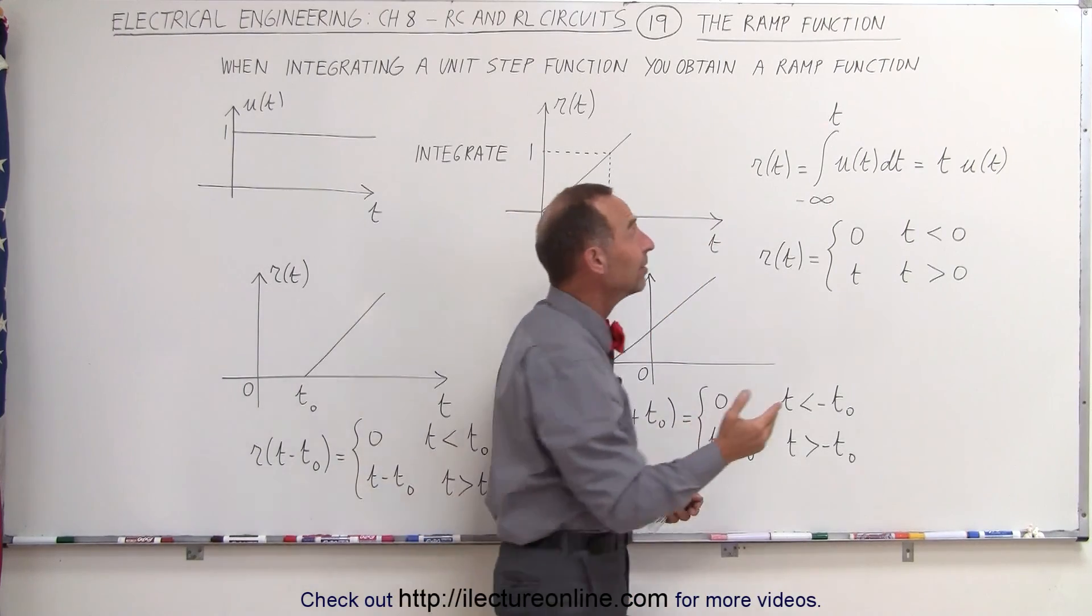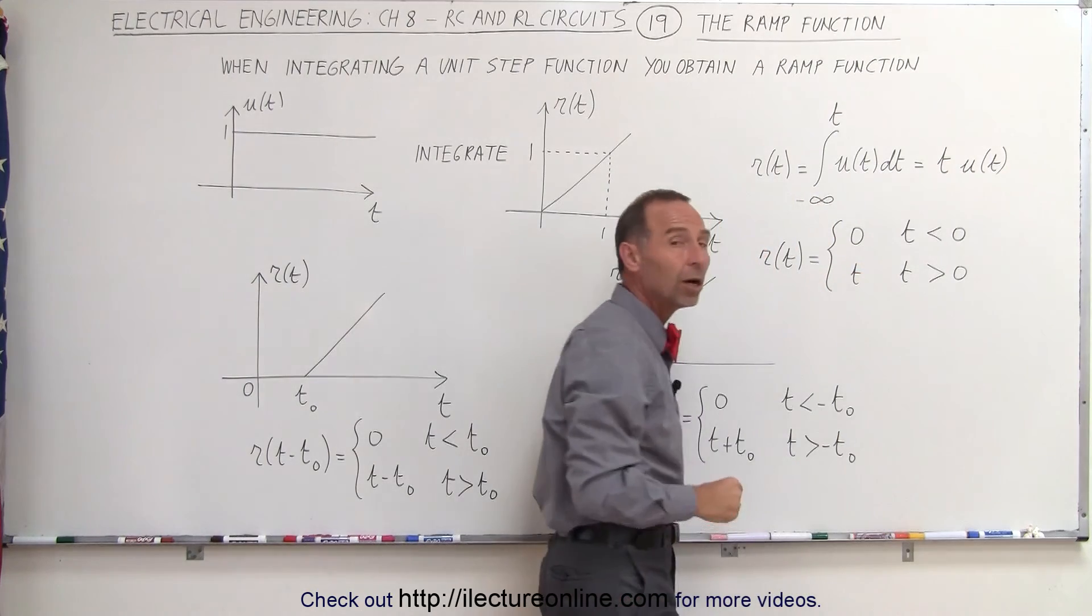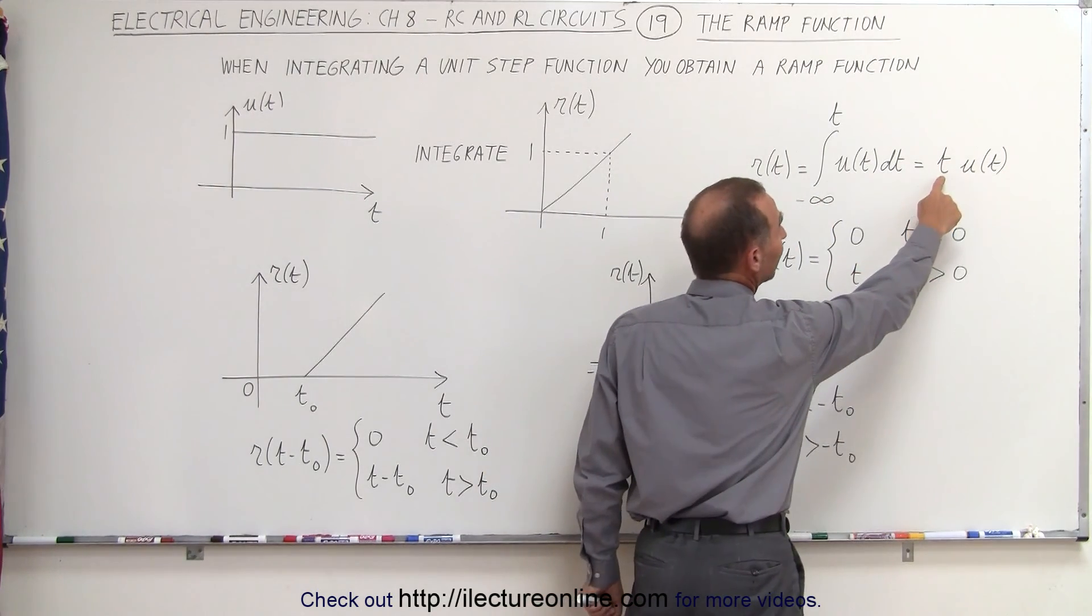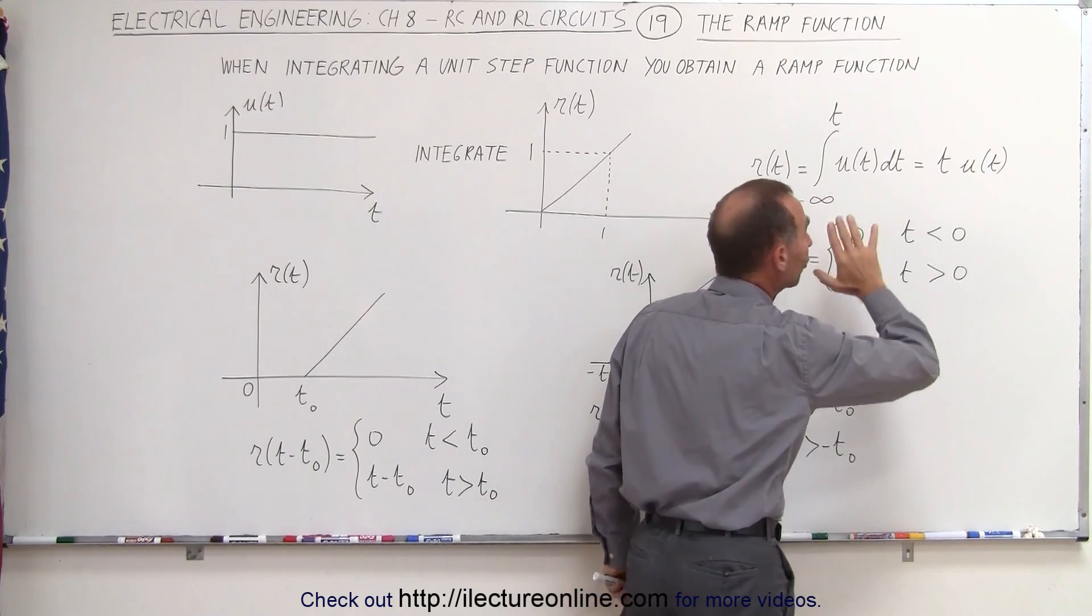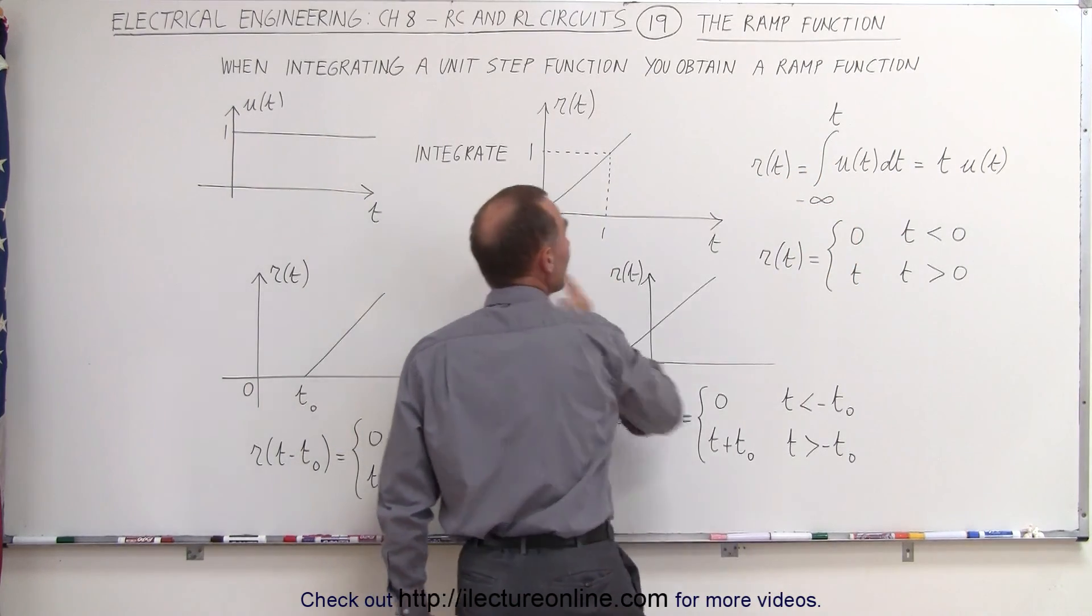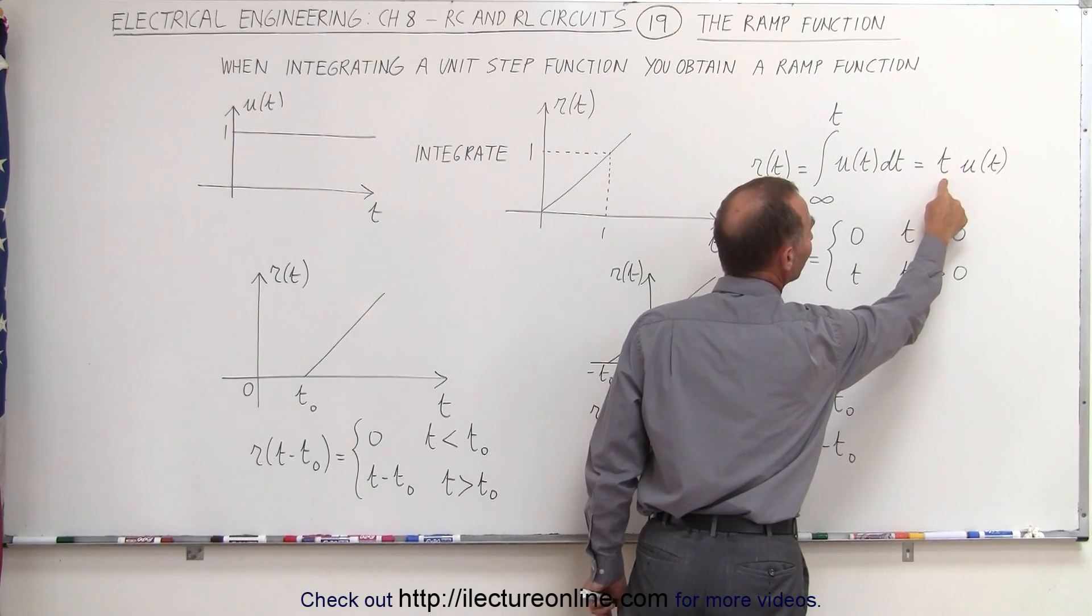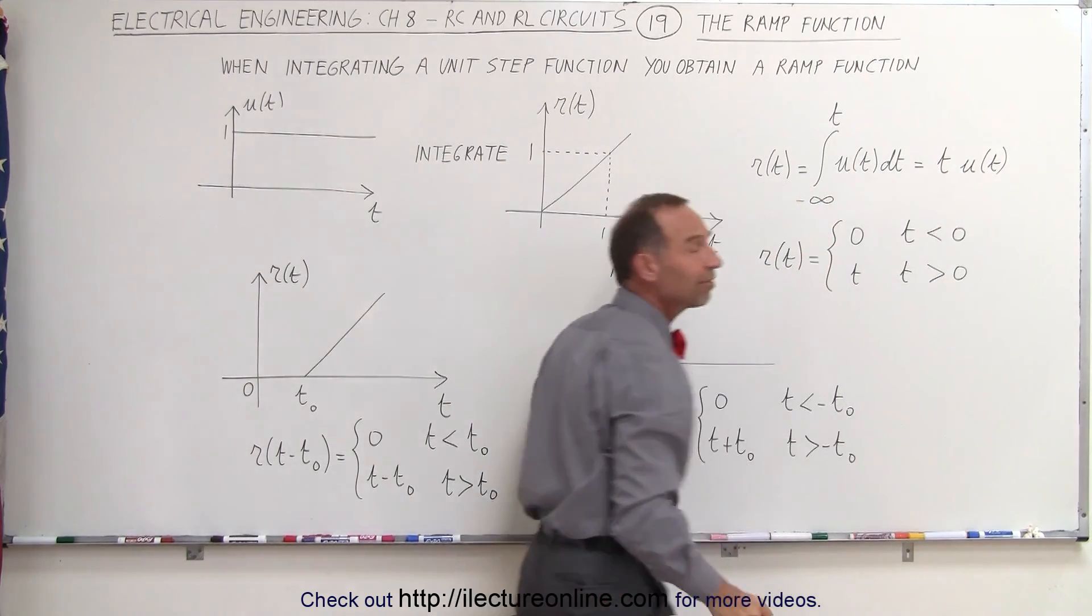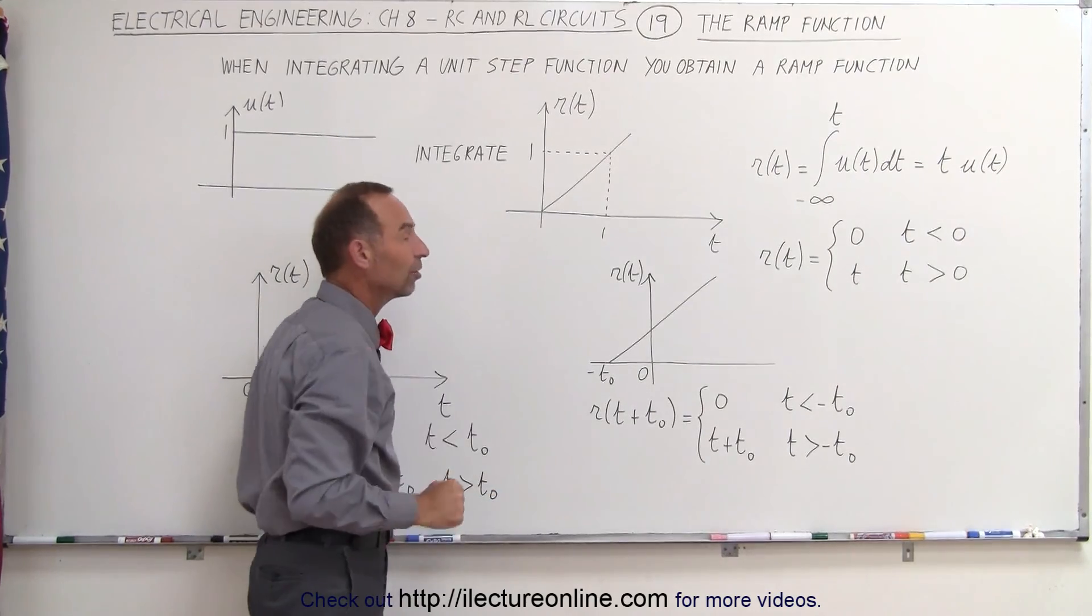Now of course the unit step function guarantees that when time is less than zero we don't get any value at all because otherwise you plug in a negative value for t and end up with a negative result. And of course you want to have zero prior to that moment so we multiply the slope 1 times t times the unit step function to ensure that there's no value for time less than zero.